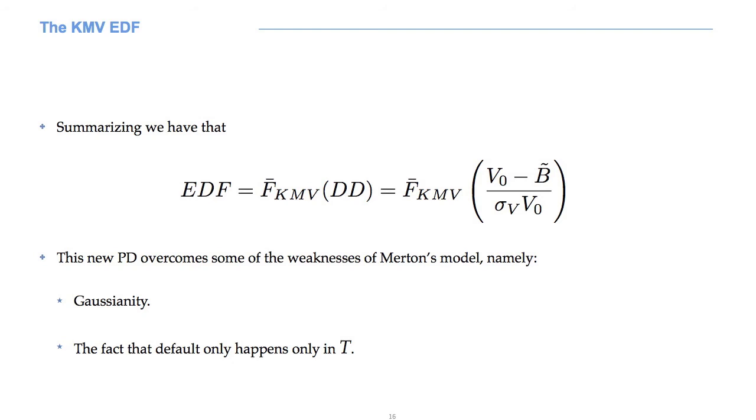For completeness, we have to say that Moody's KMV uses a proprietary algorithm to obtain V0 and sigma V. In other words, they do not use the minimization procedure we have seen under Merton's model. However, this is rather technical and we do not enter into details. The KMV model is hence able to overcome two problems of Merton's one, Gaussianity, and the fact that default only happens in T.